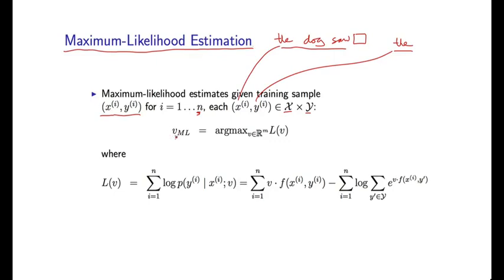And that means that the maximum likelihood parameters, v sub ml, are going to be the parameter values, out of the space of all possible m-dimensional vectors, that maximize some function L of v.